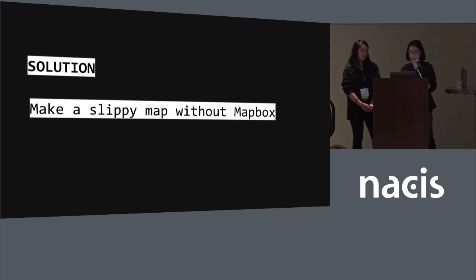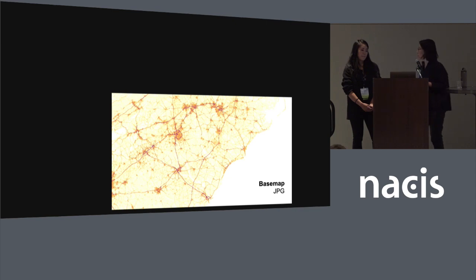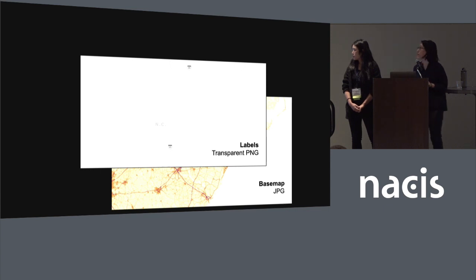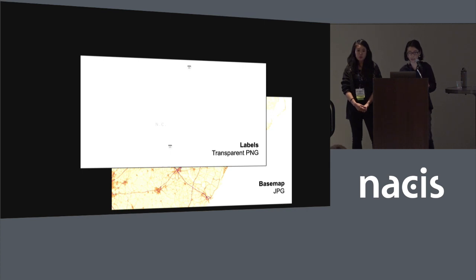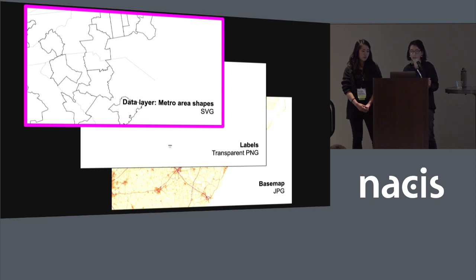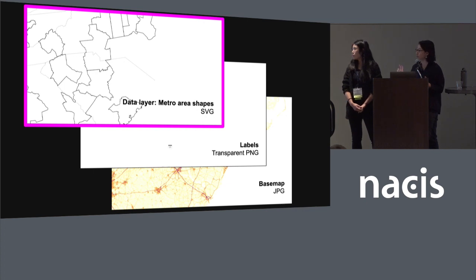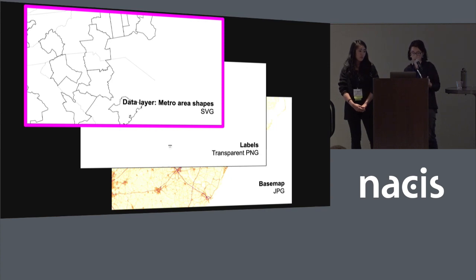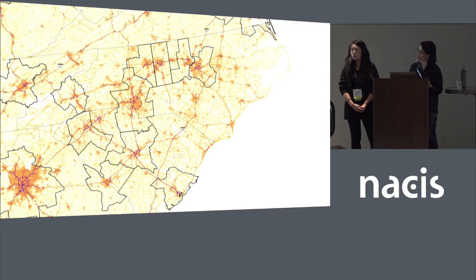To do that, we rasterized several layers. We have a flat JPEG as the base map with our data, then a transparent PNG on top with state names and road shields. Then an SVG layer on top that readers actually interact with — those are metro area shapes and state lines. We kept those in SVG because they show up crisper on a web page.